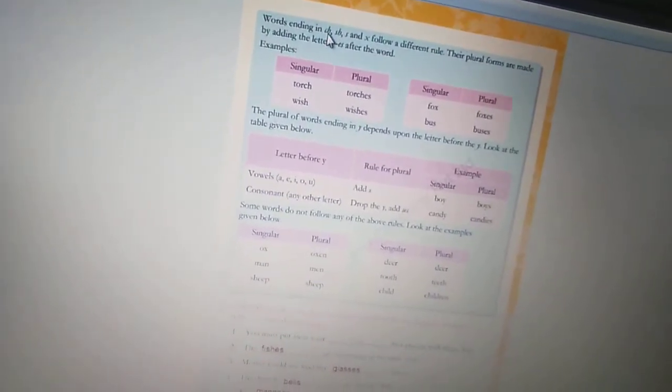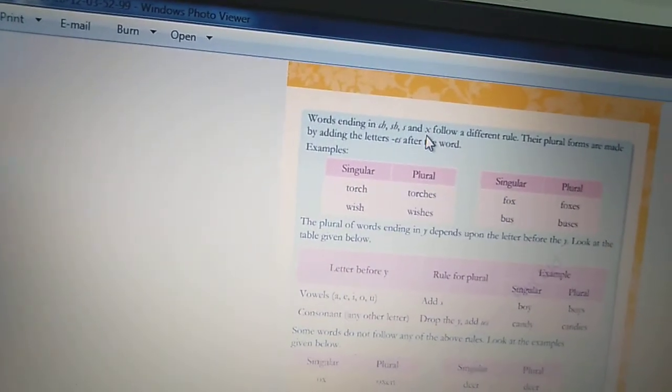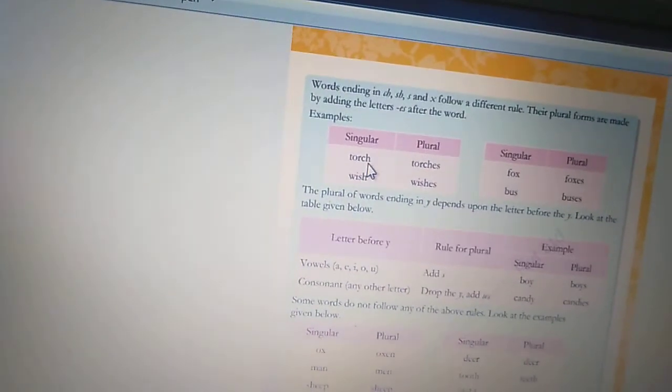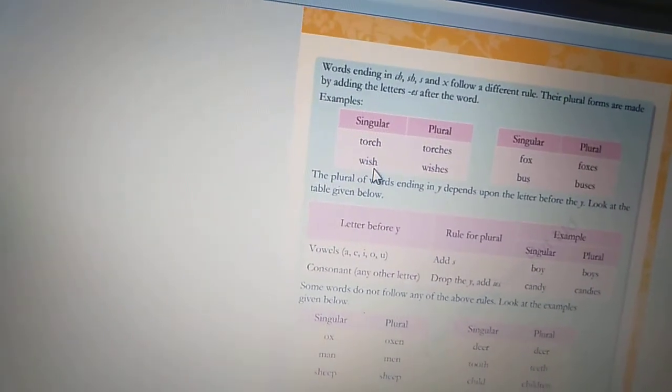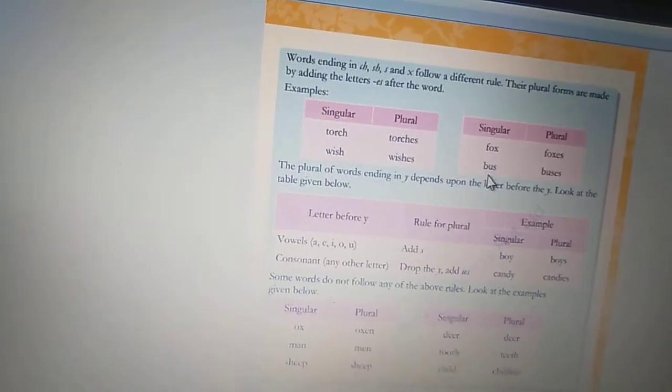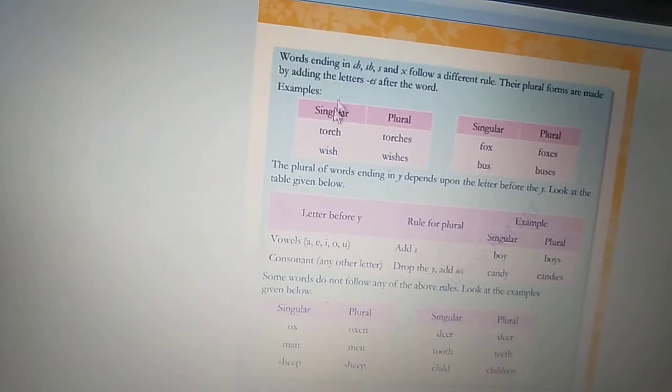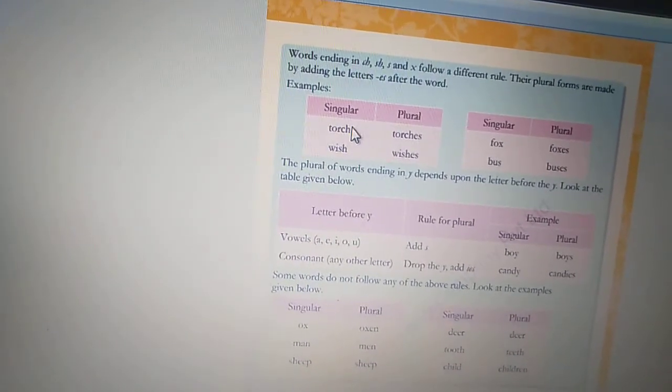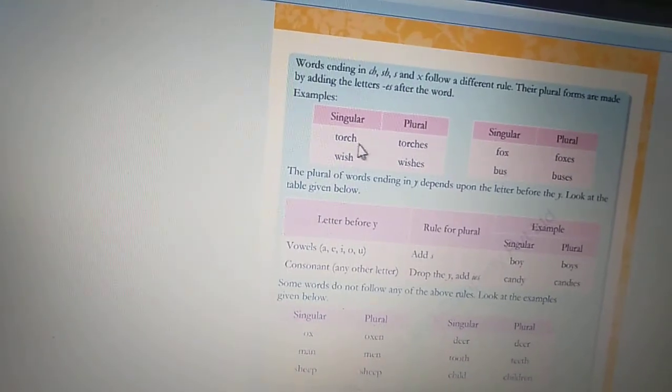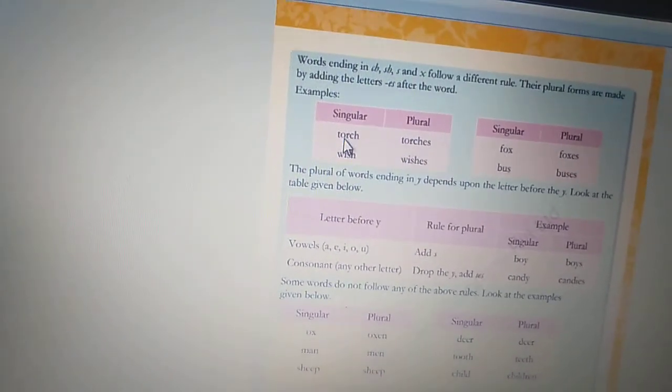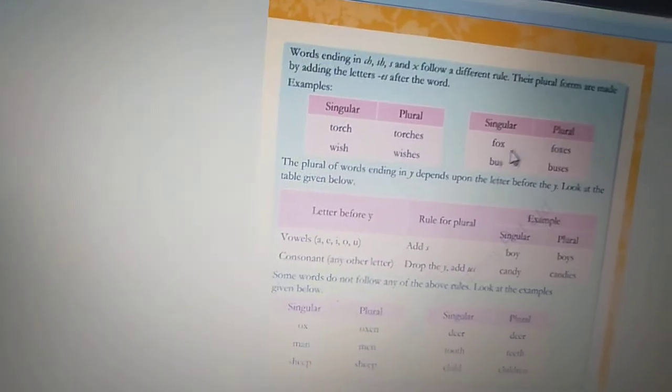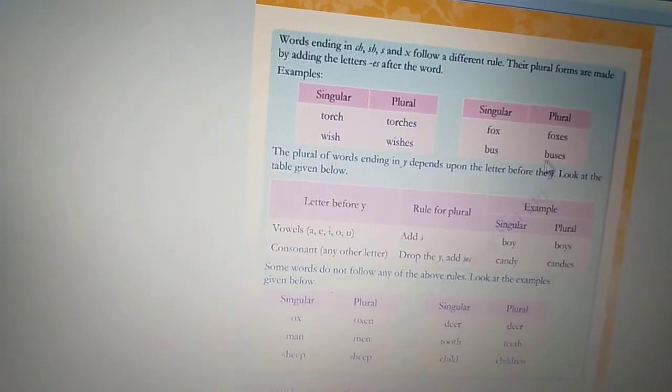There are other rules also to change a word from singular to plural form. For example, the words ending in ch, sh, s and x. Jho words, jinkai end me ch ho ta hai, jaisi torch, sh ho ta hai, jaisi wish, x ho ta hai, jaisi fox, bus, yaa phir s ho ta hai. Un words ki, hum kiise form change kerti hai? We put es after the word. Hum word ke pichhe es laga da te hai. For example, torch, torches. Wish, wishes. Fox, foxes. Bus, buses.